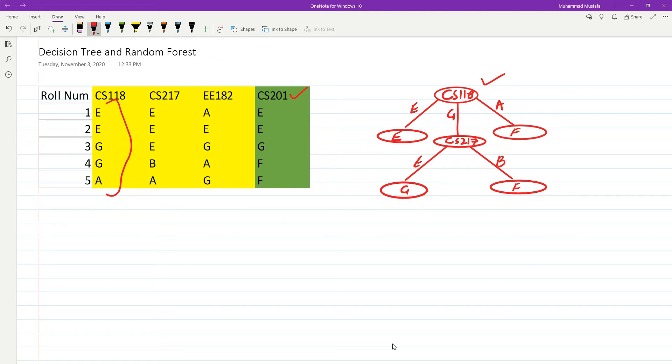Let's see the rules. If I take for example this first branch here, it means that given a new test case, I'll see that if the grade in cs118 is equal to excellent, then the grade in cs201 is also excellent. That's the first prediction and the first rule.